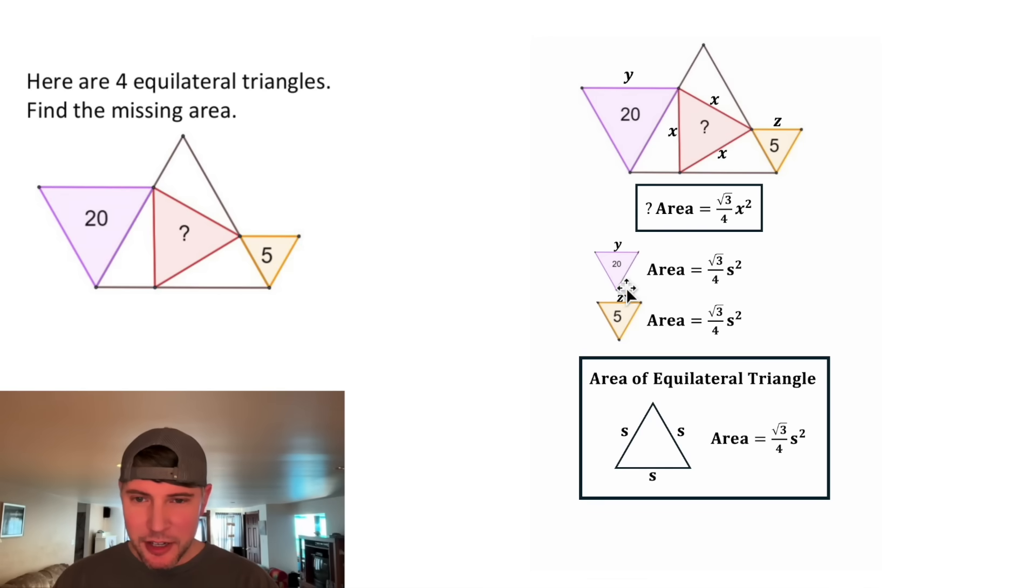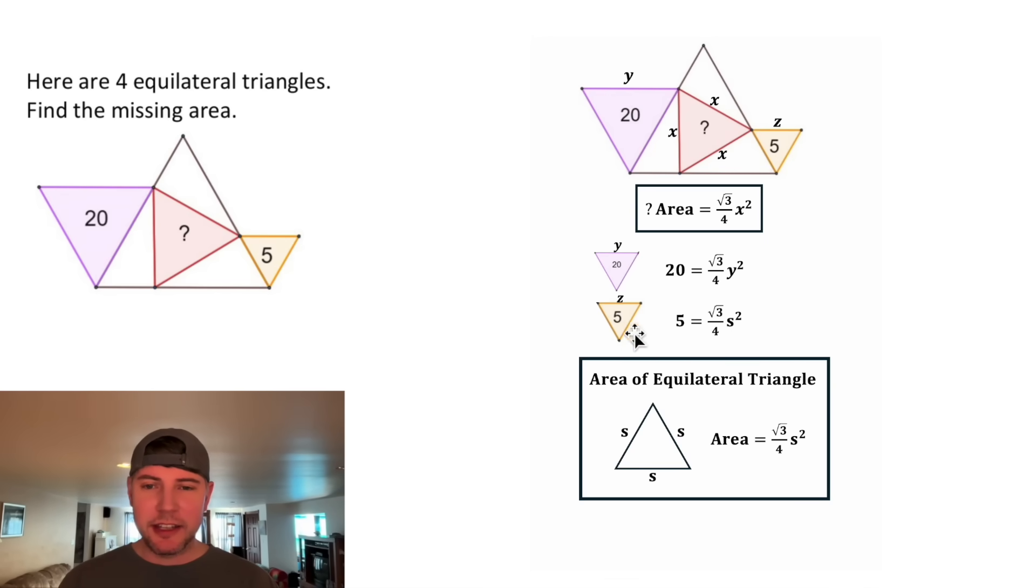For this top one, the area is equal to 20 and the side length is equal to y. And for this one, the area is equal to 5. In place of the side length, let's plug in z.